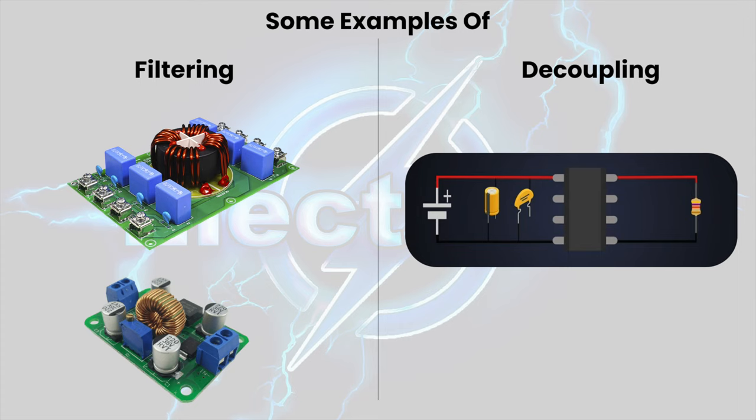Filtering and decoupling: resistors are often used in combination with capacitors to create filter circuits. These circuits can filter out unwanted frequencies or noise from signals. Additionally, resistors are used in decoupling circuits to stabilize power supplies by reducing voltage fluctuations.